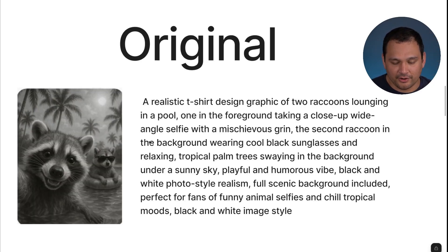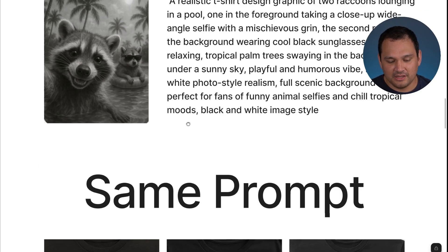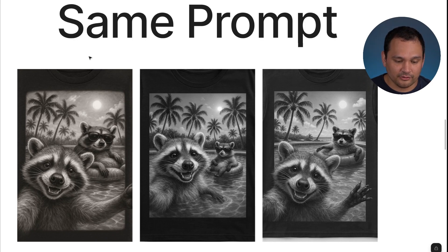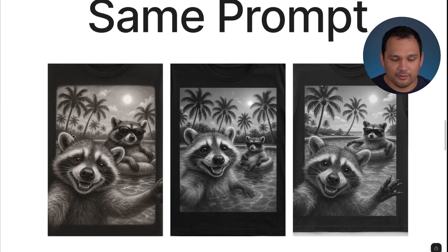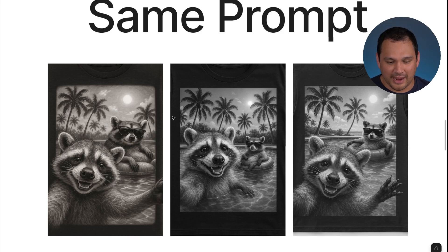Here's the first image — a selfie of a couple of raccoons in a beach setting. This would typically be considered a pretty long prompt, and it does a good job getting this image. But I ran it in ChatGPT three times with the exact same prompt and got pretty varied results. The arms are in different positions, the second raccoon varies in how far back it is, and the overall setting looks different each time.